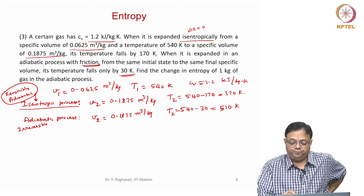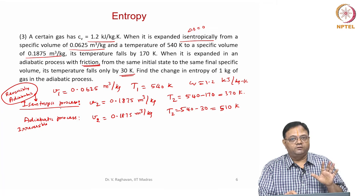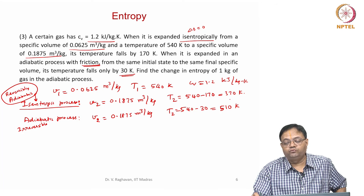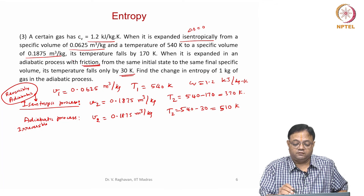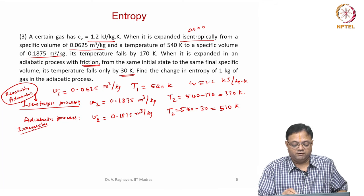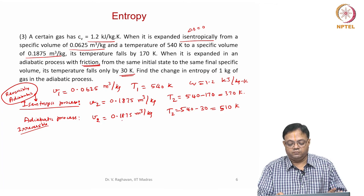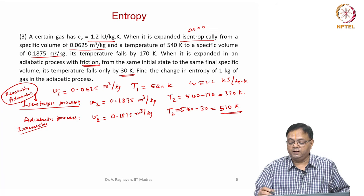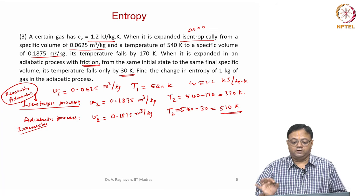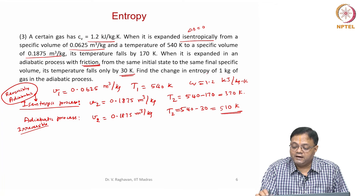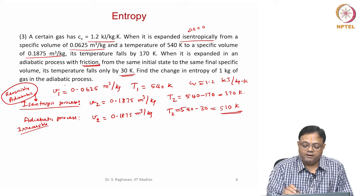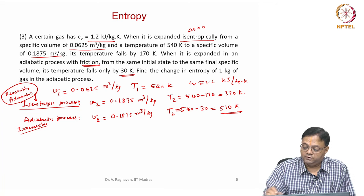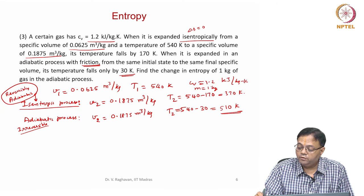The substance has Cv = 1.2 kJ/(kg·K). V1, T1 are given for the initial state. One process is isentropic (reversibly adiabatic): V2 = 0.1875, T2 = 370 K. The adiabatic irreversible process gives V2 = 0.1875 but temperature drops only to 510 K. The question is: find the change in entropy for 1 kg of gas in the adiabatic irreversible process.